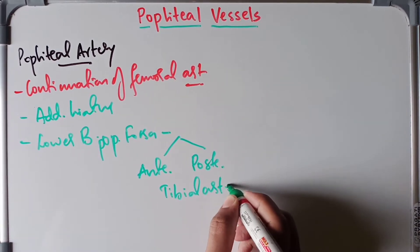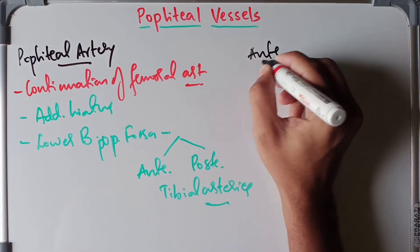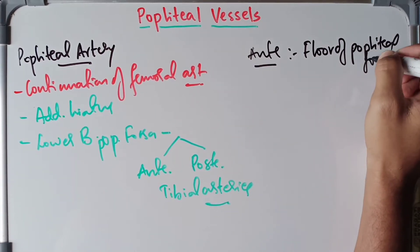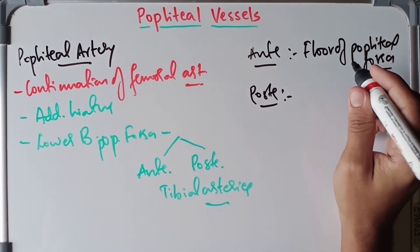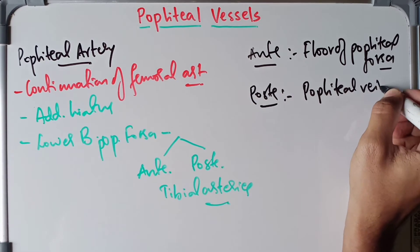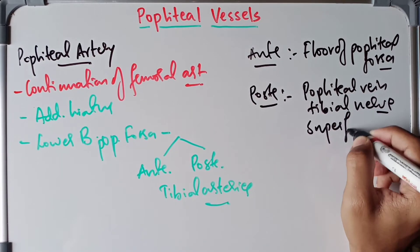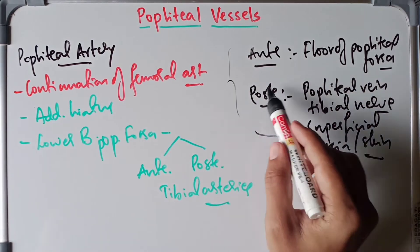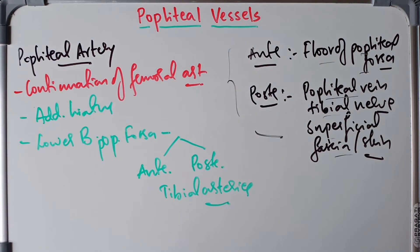Now let us discuss the relations of the popliteal artery. Anteriorly, the floor of the popliteal fossa forms the anterior relation of the popliteal artery. Posteriorly, the posterior relation is formed by the popliteal vein, the tibial nerve, and the superficial fascia as well as skin.